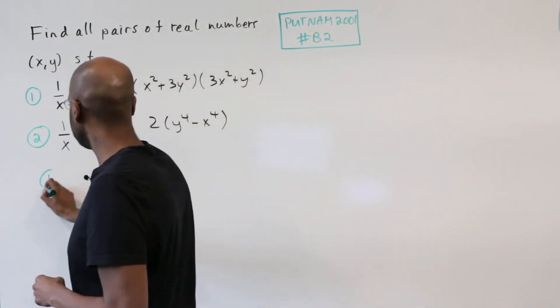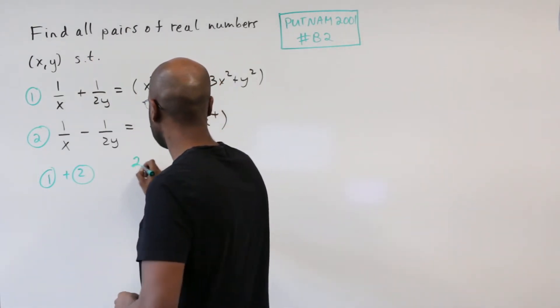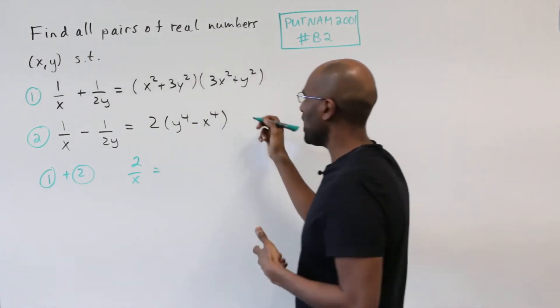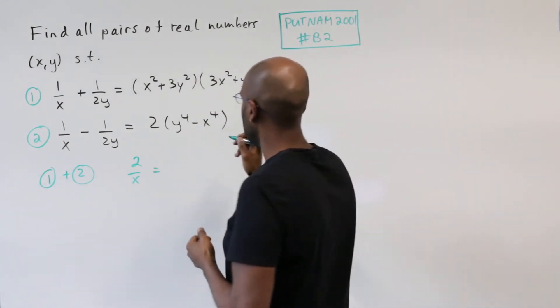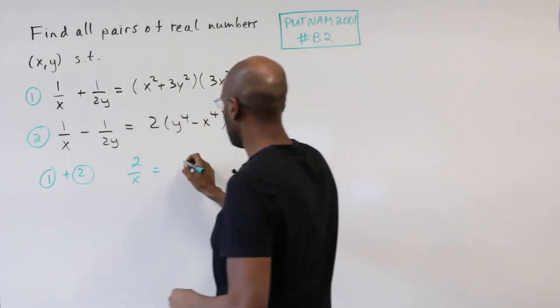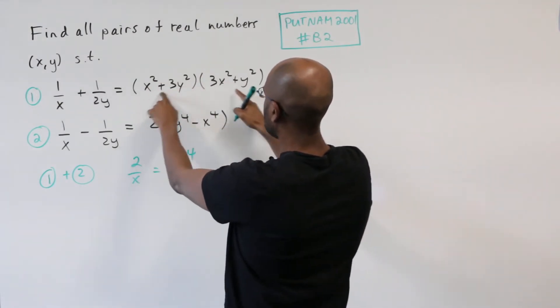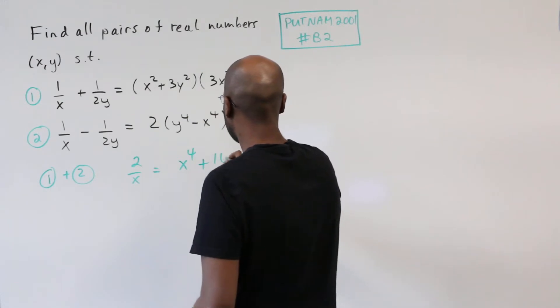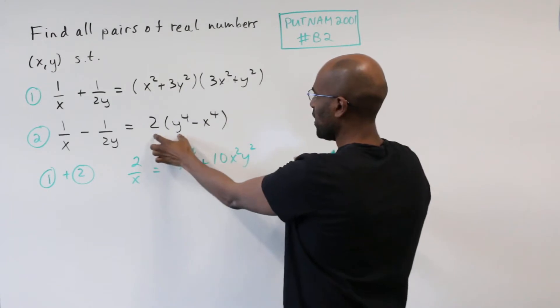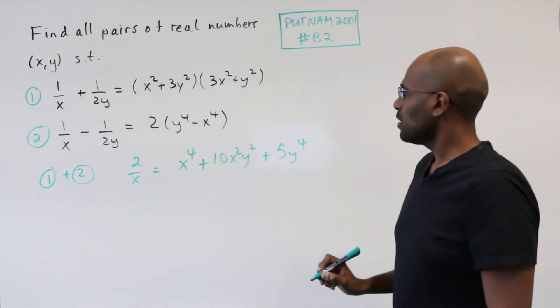So we'll start with 1 plus 2. If we do that, we'll get a 2 over x on the left hand side and on the right we'll get the sum of these two things. So I'll actually expand these just to make things simpler. So we'll have a 3x to the fourth here and a minus 2x to the fourth which gives us an x to the fourth. And then the cross term here is 10x squared y squared. And then we have a 3y to the fourth plus the 2y to the fourth which gives us 5y to the fourth.